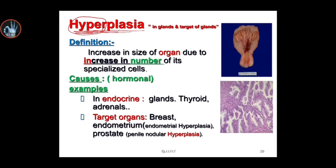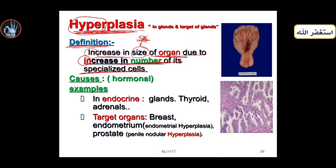Hyperplasia. The definition of hyperplasia is increase in the size of the organ due to the increase in the number of its specialized cells. So hyperplasia is increase in the size of the organ due to the increase in the number of its specialized cells.